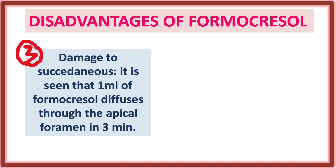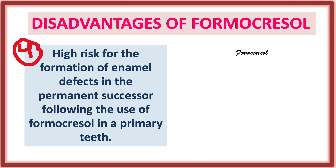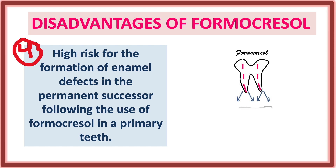A very important disadvantage is damage to the succedaneous tooth. It has been shown that 1 mL of formocresol diffuses through the apical foramen in three minutes. If formocresol diffuses through the apical foramen, it will affect the permanent dentition — there is a high risk for enamel defect formation in the permanent dentition following use of formocresol in primary teeth.